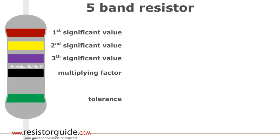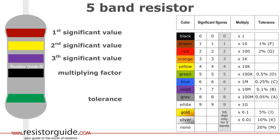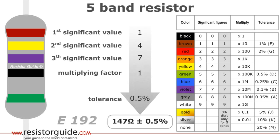So, the first three digits represent the significant values of the resistance, the fourth the multiplication factor and the fifth the tolerance. Again, we use the color code chart to solve this example. And the solution is 147 ohms with a half percent tolerance. This is a preferred value from the E192 series.